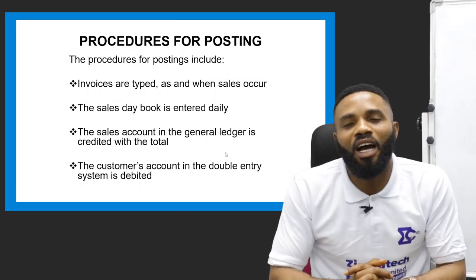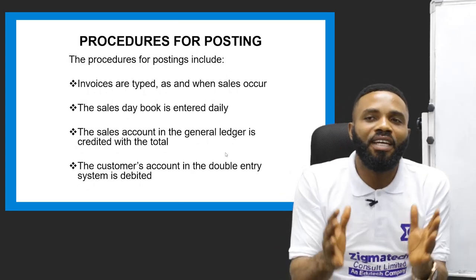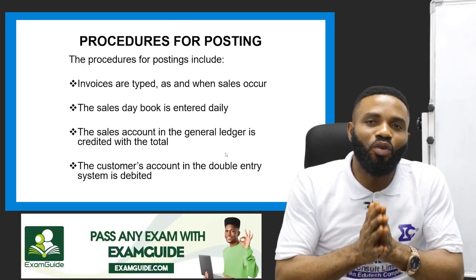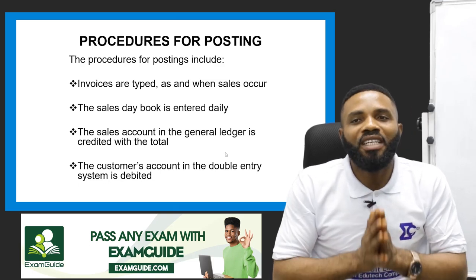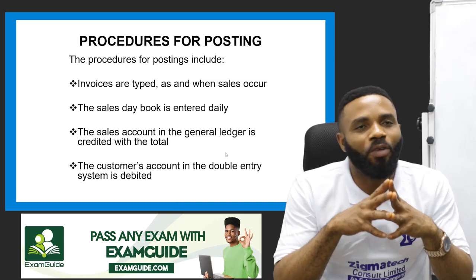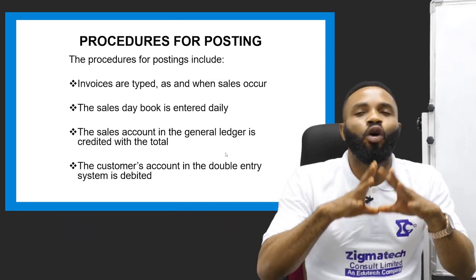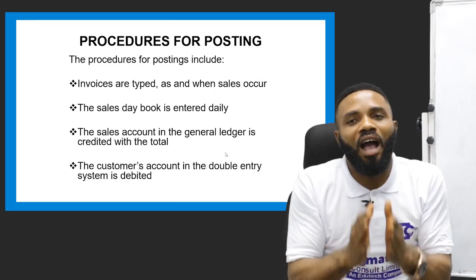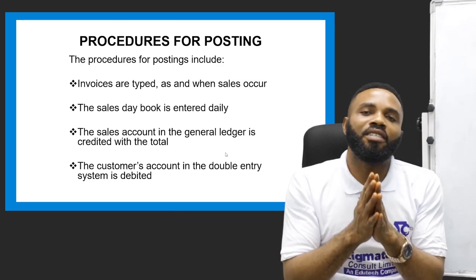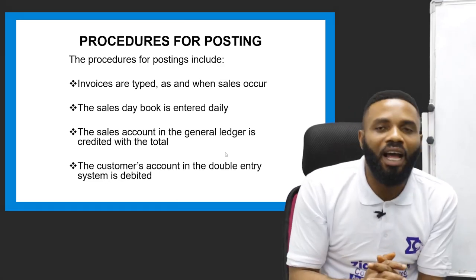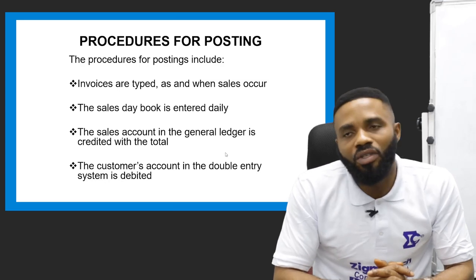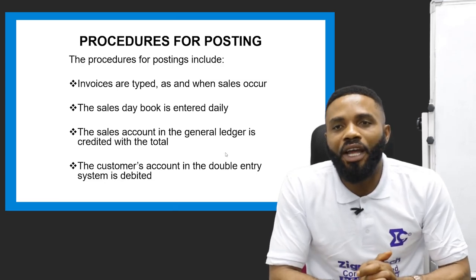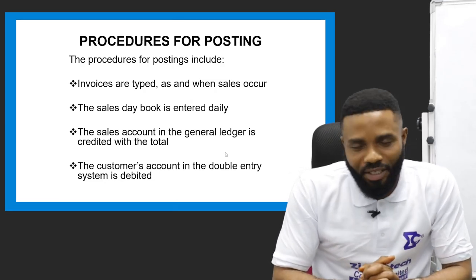The next procedure is that the sales account in the general ledger is credited with the total. By the time you sum up everything sold for that particular day, the total should be transferred to the general ledger — the principal book of account that houses all other transactions. In the ledger, whatever you have at the end of the sales day book is summed and credited to the sales ledger.